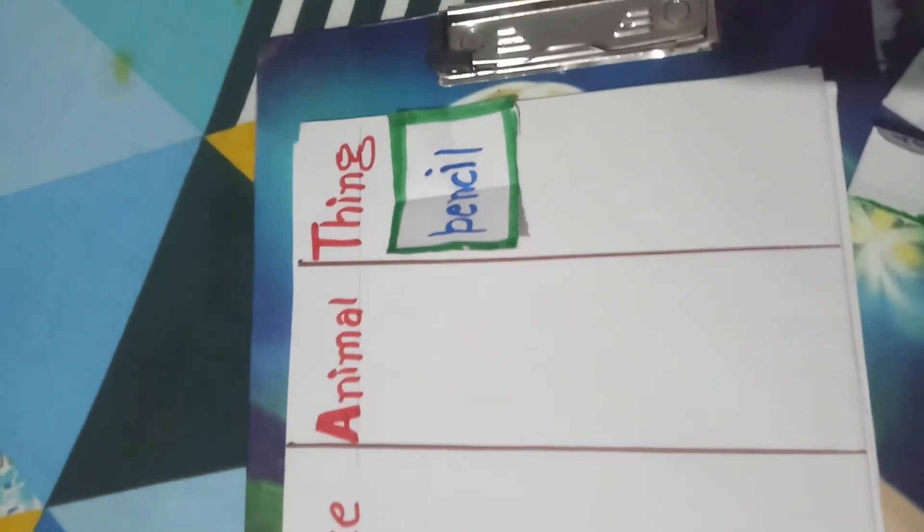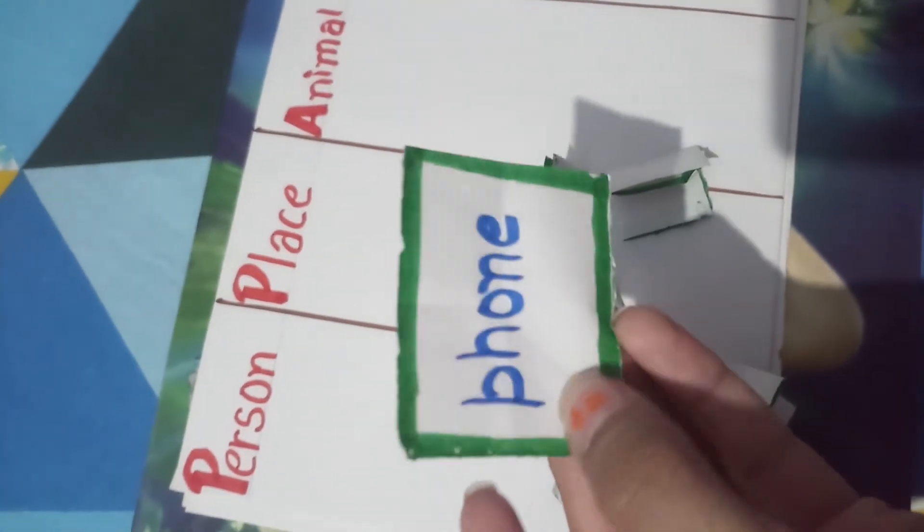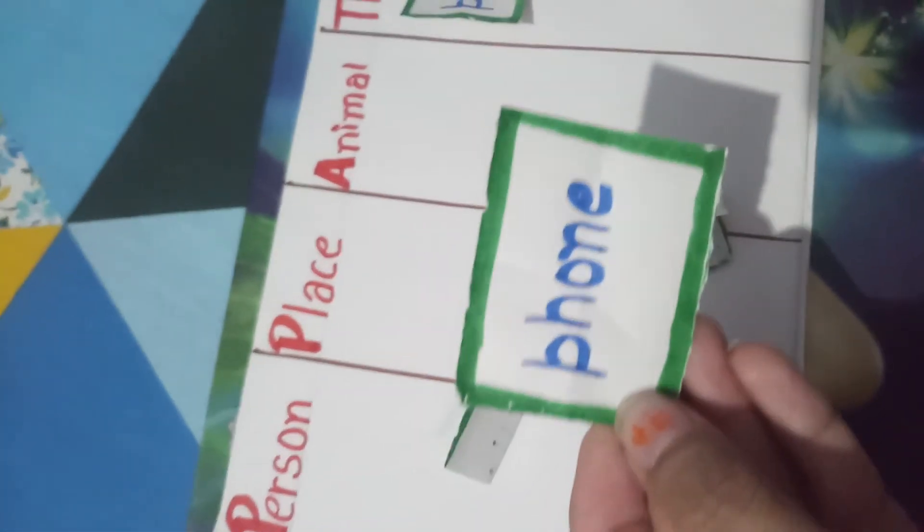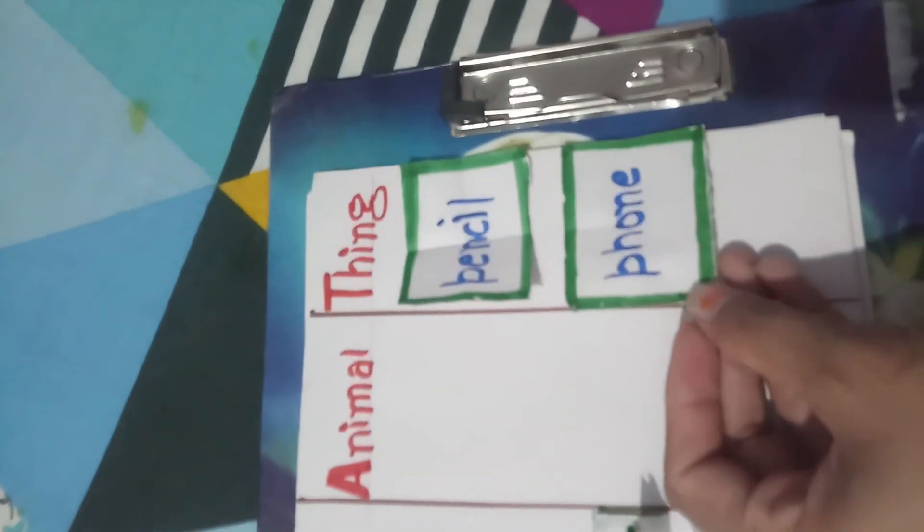And again, what we will do? We will throw the slips again. And we will pick again. I will pick one this and I will open this. What is this? Phone. Phone is the name of thing. So, again I will keep it here.